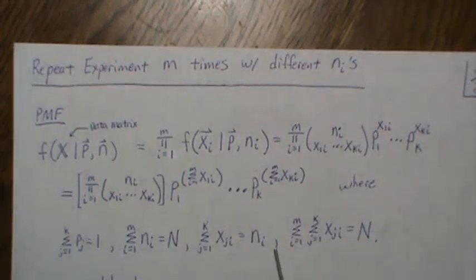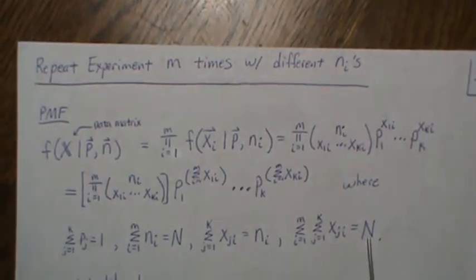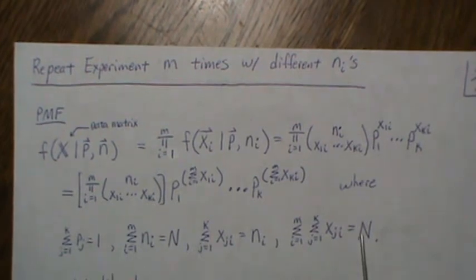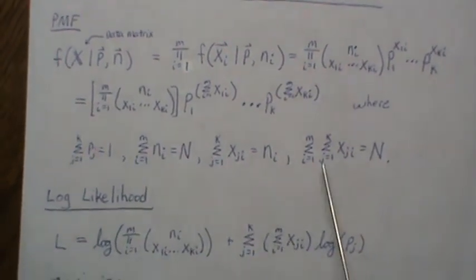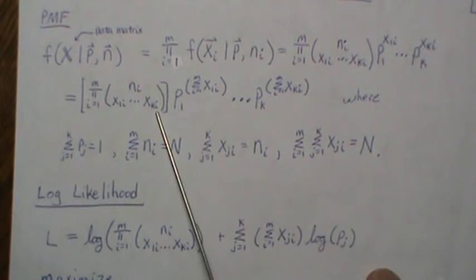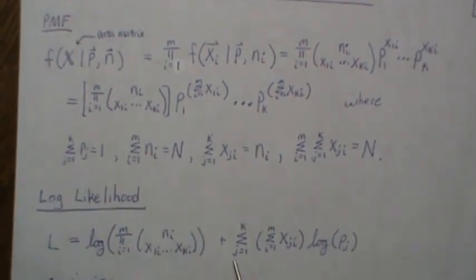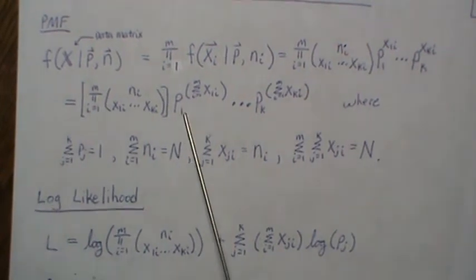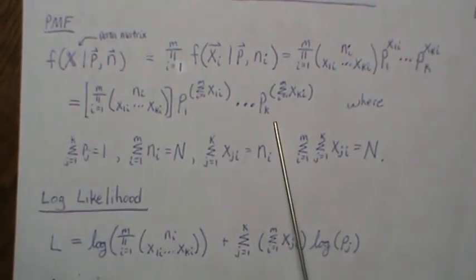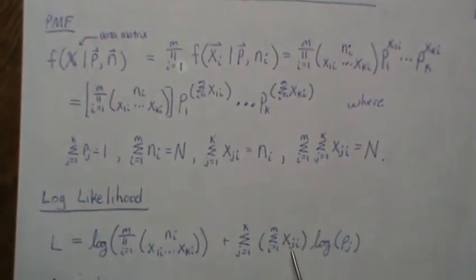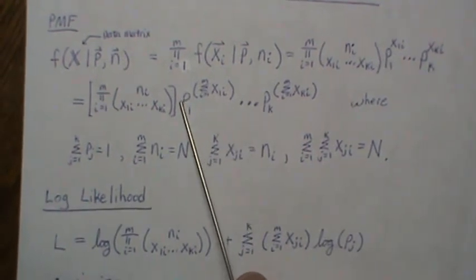Now the log likelihood of this right here is the log of this, and since it's a product it's plus the log of this. But the log of a product's the sum of the log, and each of those exponents get pulled out front. So this is the log likelihood.